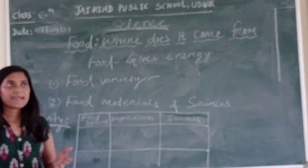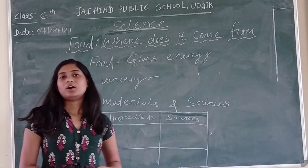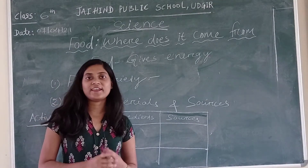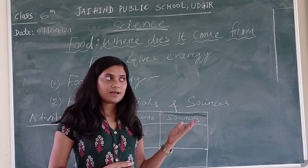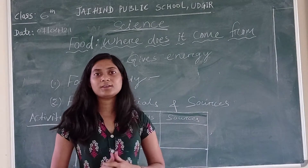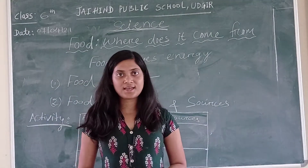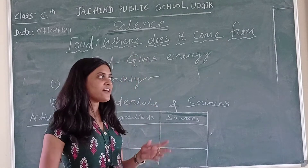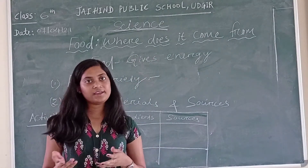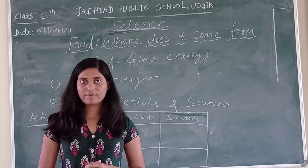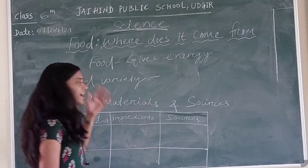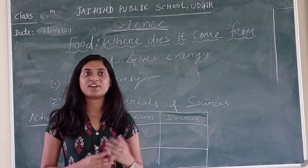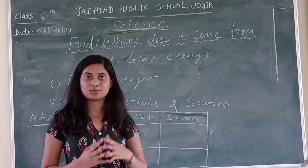For example, in Maharashtra a certain dish is very common, but in other states like Odisha — and you all know that I am from Odisha — we don't know about that dish. In Odisha a very common food is water rice, and here people don't know about water rice. This is the food variety: different states in India use different types of food.